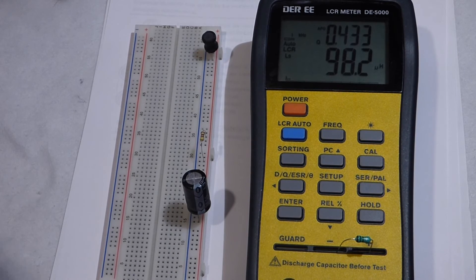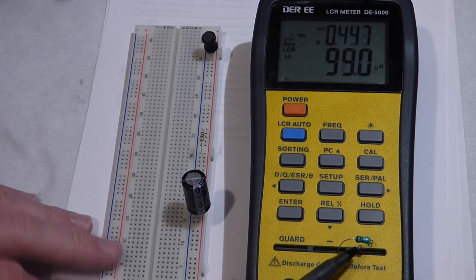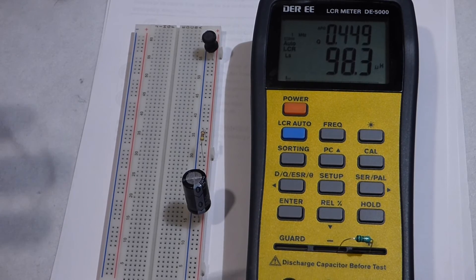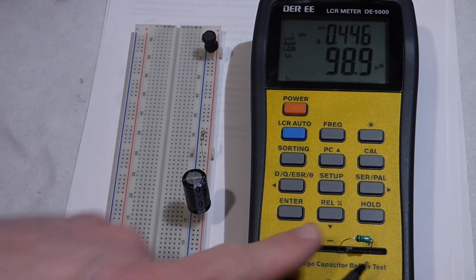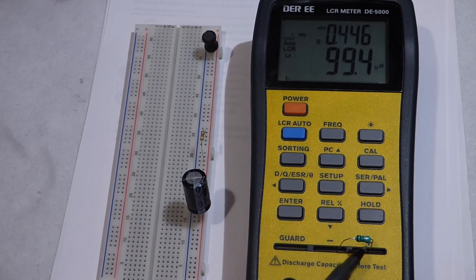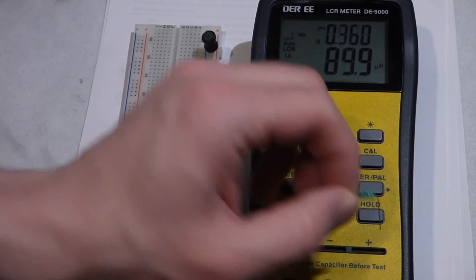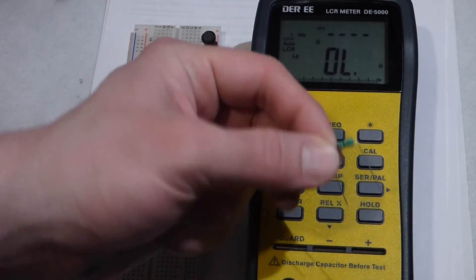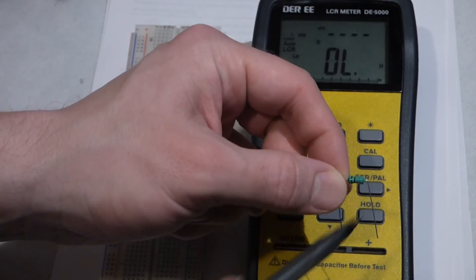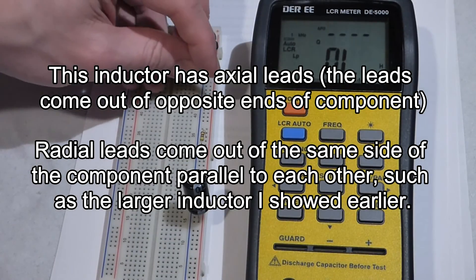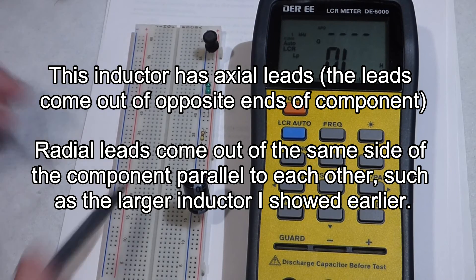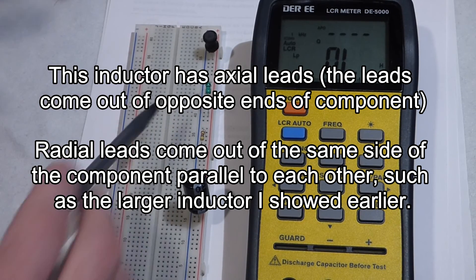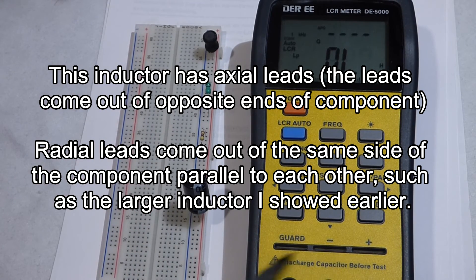Now sometimes capacitors come in a similar package - probably not with stripes, but they'll put capacitors into a component like this with the leads coming out of the end. I think these are radial leads, either radial or axial. If you're not sure, again discharge just in case it is a capacitor.